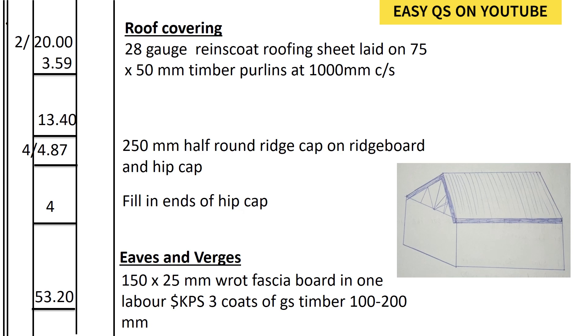So it shall be 53.20 in the dimension column. Then 450 by 25 millimeters wrought fascia board in one labor, and 3 quarts of GST bar, 100 by 200 millimeters.